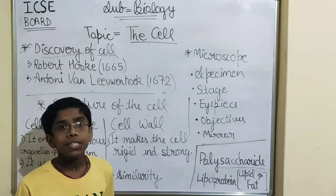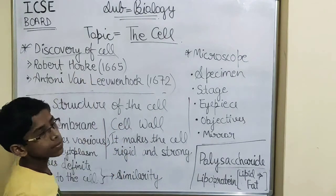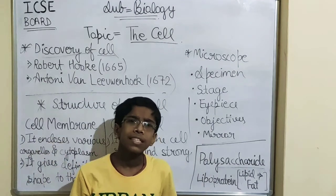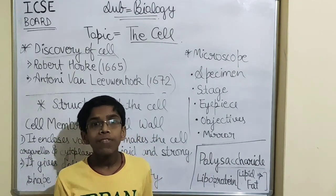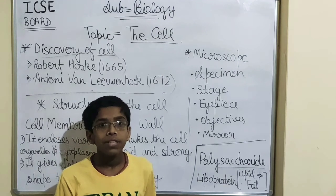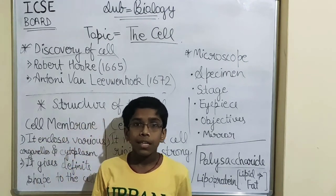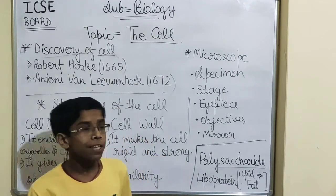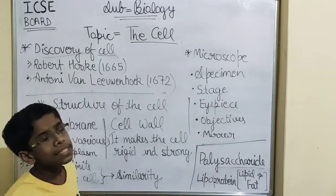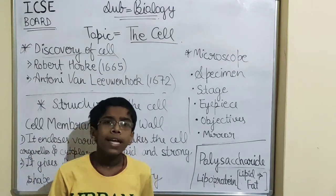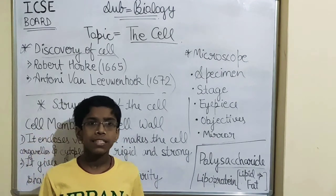Our next topic is the discovery of the cell. Who discovered the cell? Who coined the word cell? Cell was first discovered by Robert Hooke in 1665. He coined the word cell. He was an English scientist.